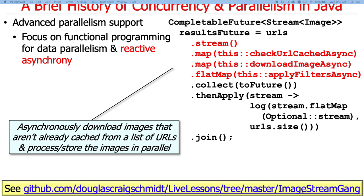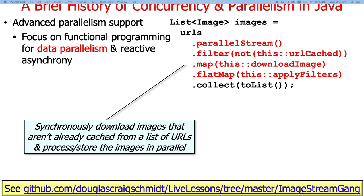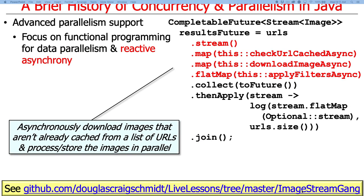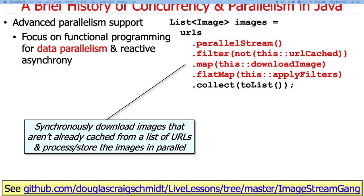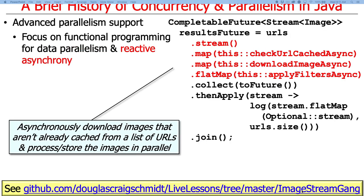Ironically, this parallel streams approach is not the most scalable way to do it. There are other ways using completable futures — the reactive asynchronous programming model — that do the same thing asynchronously and are actually more efficient, even though the code is more complicated. So parallel streams is good, but sometimes completable futures is better. I'll tell you a lot more about that if you come back next fall.